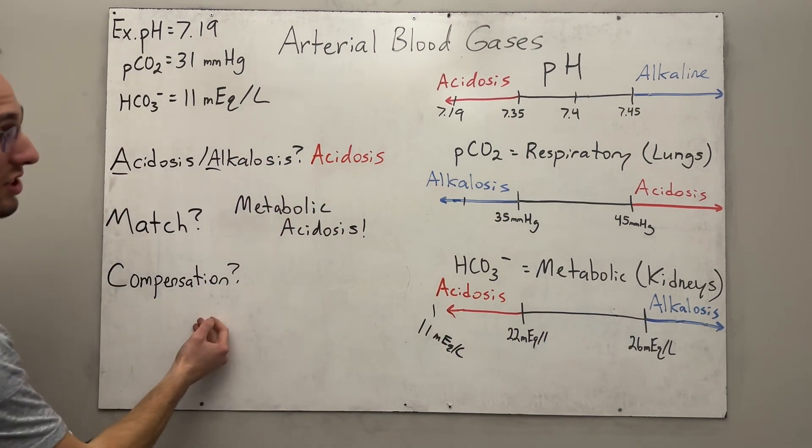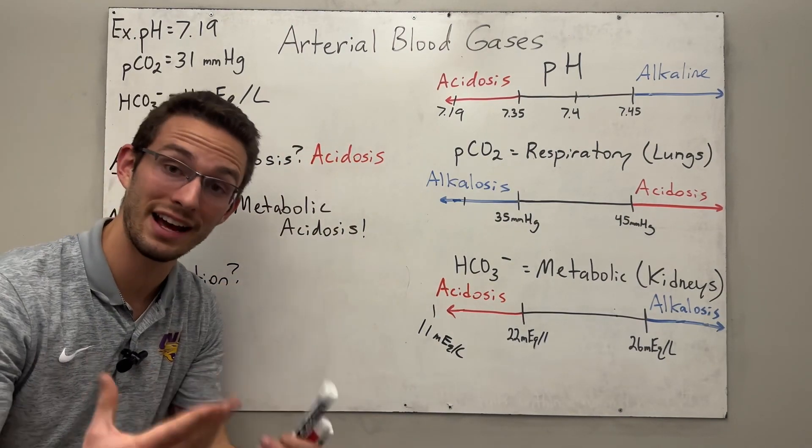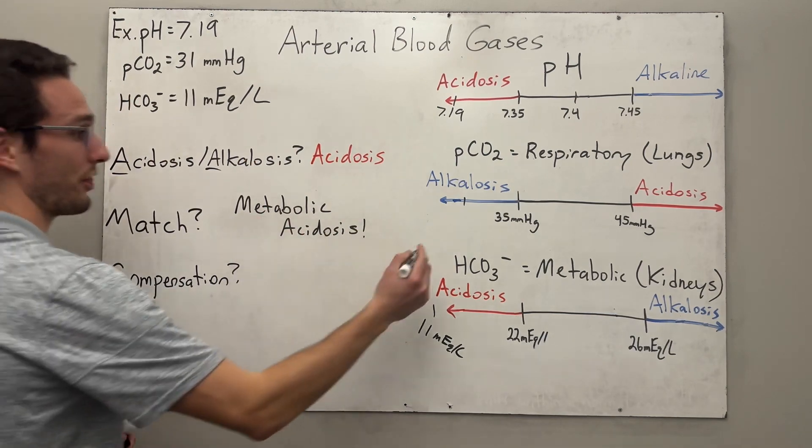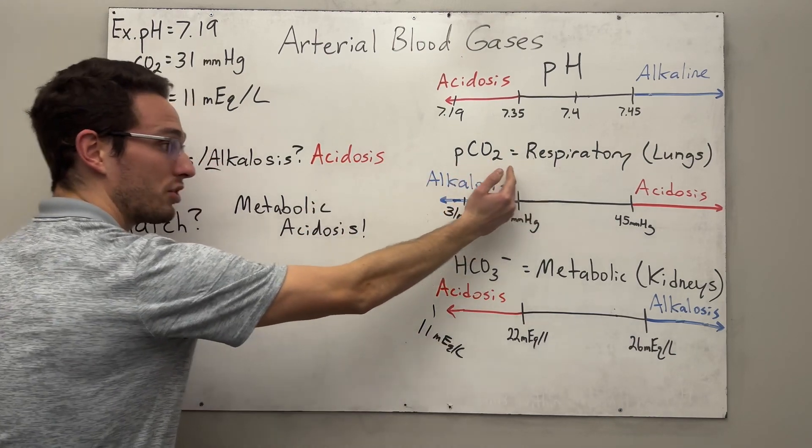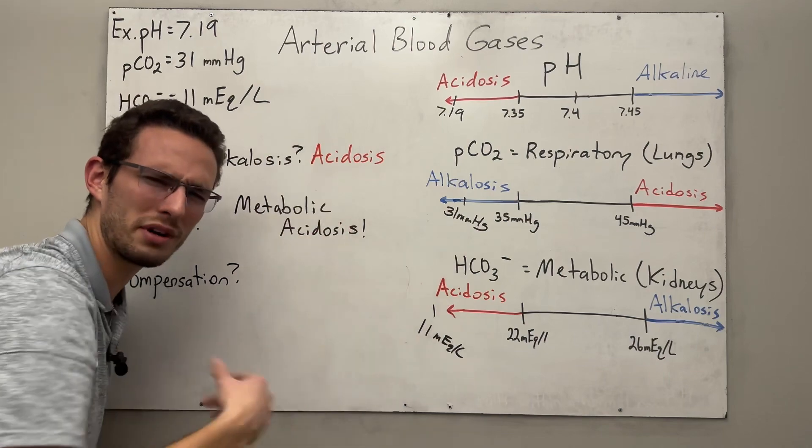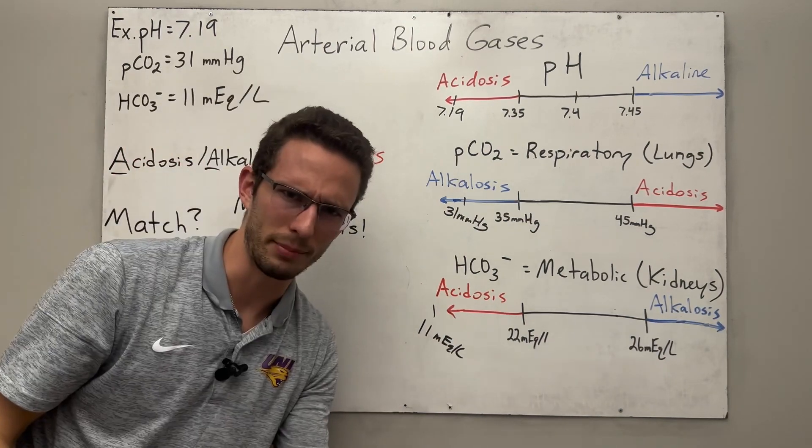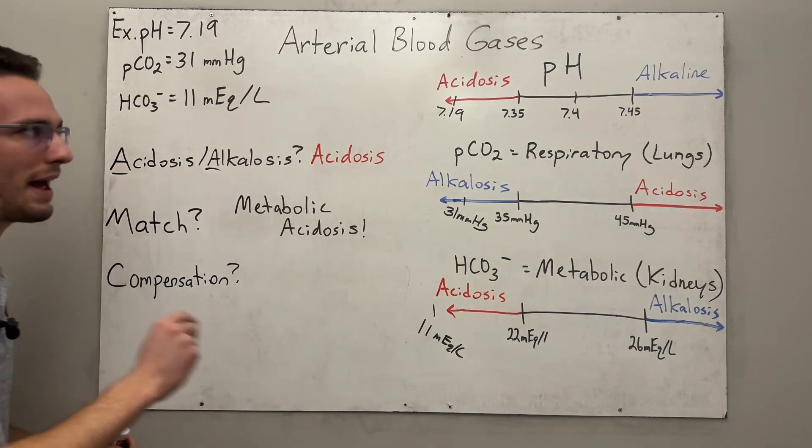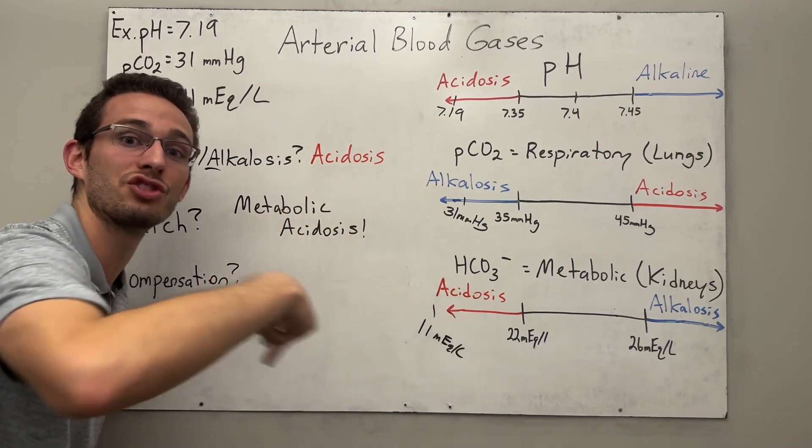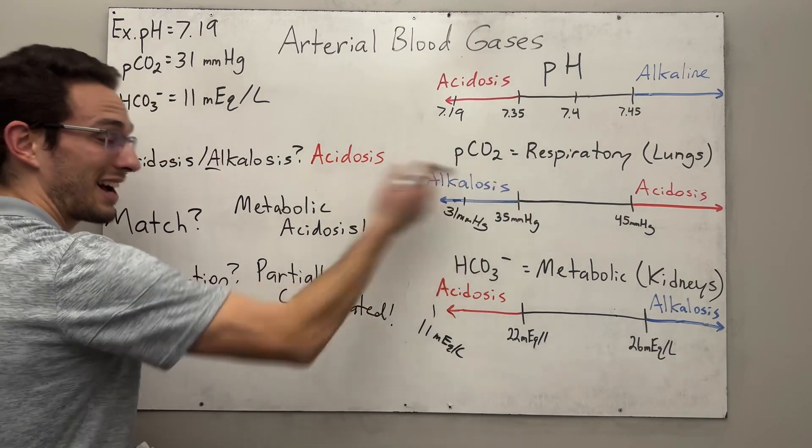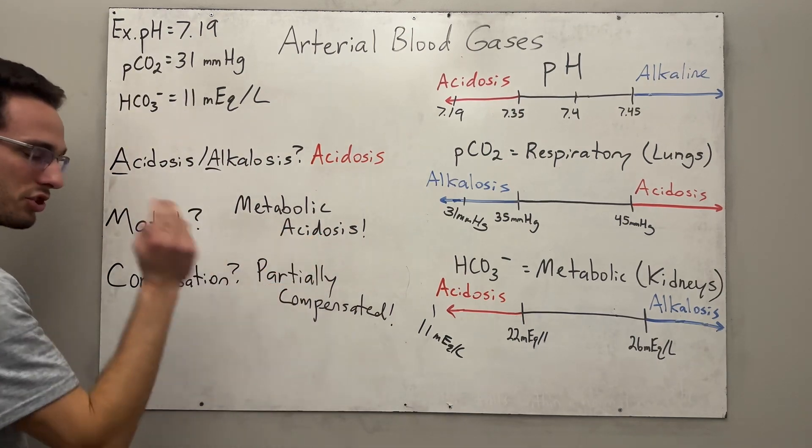Now the hard part, looking at the compensation. So we need to see if the other value, not the bicarb, the carbon dioxide is actually compensating for it. And as we see, look at it, it is alkalotic. It is at 31 millimeters of mercury. So since we're in acidosis, we see carbon dioxide pushing the scale the other direction getting lower. So we know compensation is occurring. But remember, is it partial or is it full compensation? Well, in this case, we have to look back at the pH. If the pH is abnormal, but we're having compensation, that means it is partially compensated. So although the carbon dioxide is compensating, it hasn't fixed the pH yet. So we're at partial compensation. So the whole answer would be metabolic acidosis partial compensation.